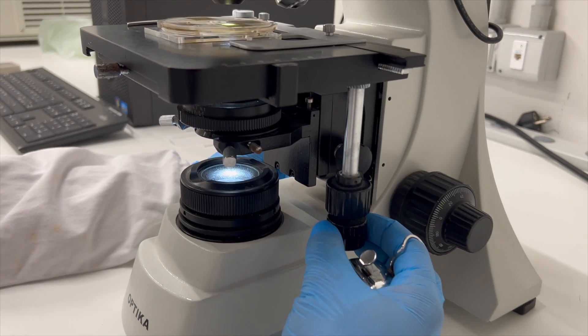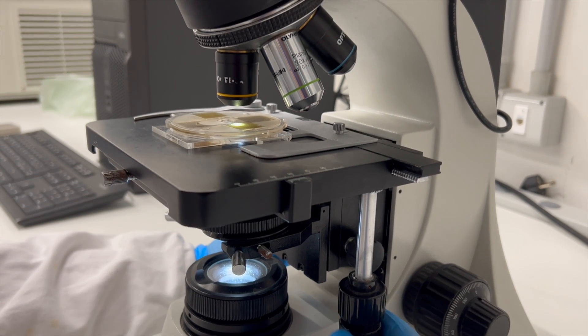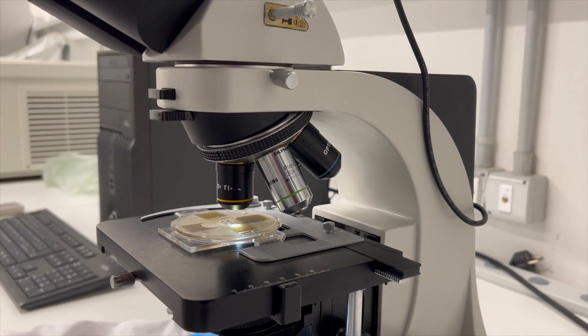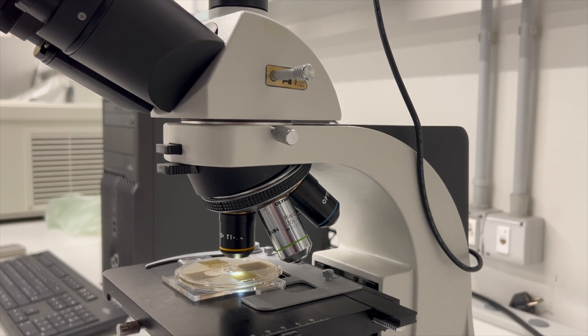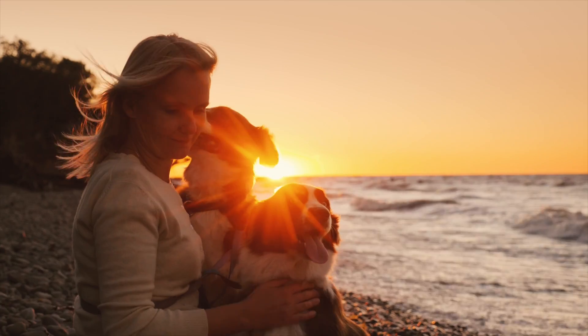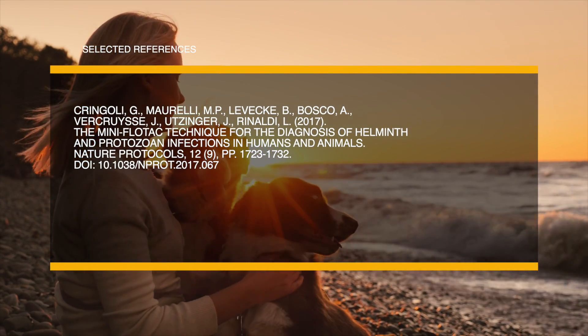The dilution ratio will influence the calculation to determine parasitic elements per gram of faeces. In this case, multiply the total number of targeted parasitic elements found in both chambers by 5 to obtain the number of eggs, cysts, or larvae per gram of faeces.